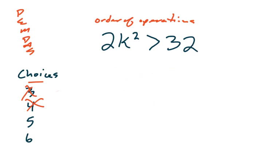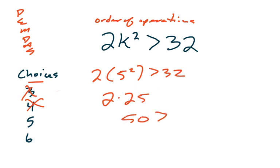I think you've probably guessed that 5 might. Let's try it. 2 times 5 squared, is that greater than 32. Well, this would be 2 times 5 squared, and 5 squared is 25. So that's 50. And is 50 greater than 32? It is. So 5 definitely works.